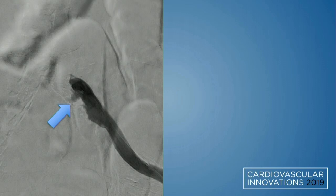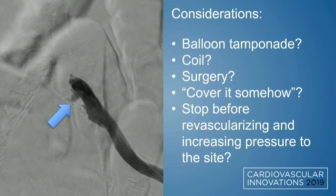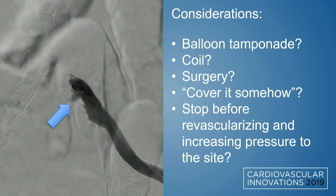This was an interesting situation — it's not just a perforation; it's fairly small, but it's also before crossing. Having not crossed the occlusion yet, it's not as simple as just placing a covered stent. We're still here having accomplished nothing but a small but present perforation. We asked: Do we balloon tamponade it? Coil it, though the neck is quite broad? Call for emergent surgery? Cover it somehow even without connecting aorta to common iliac? Stop and give protamine to reverse anticoagulation, particularly before opening up flow and increasing pressure to the perforation site?